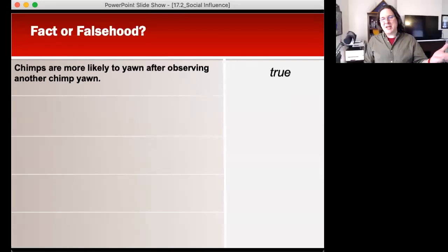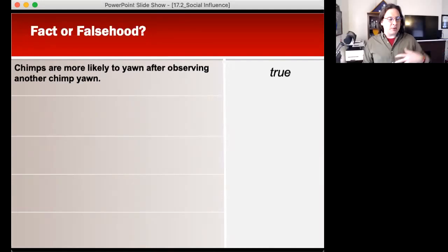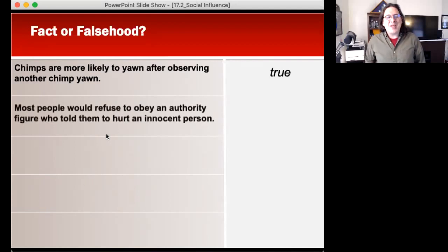Absolutely. So we see somebody doing something and the activity in our brain almost mirrors what the activity is in their brain when they're doing it, just with us observing it. If somebody is relaxed enough to be yawning, we kind of get into that relaxation. Next one.